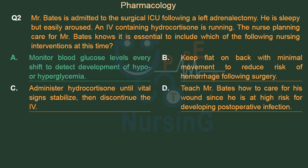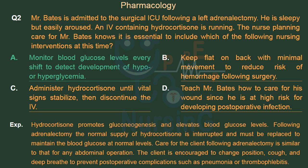Monitor blood glucose levels every shift to detect development of hypo- or hyperglycemia. Hydrocortisone promotes gluconeogenesis and elevates blood glucose levels. Following adrenalectomy, the normal supply of hydrocortisone is interrupted and must be replaced to maintain blood glucose at normal levels. Care following adrenalectomy is similar to that for any abdominal operation — the client is encouraged to change position, cough, and deep-breathe to prevent post-operative complications such as pneumonia or thrombophlebitis.